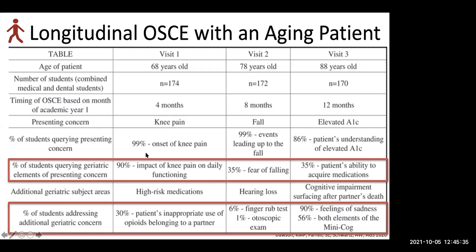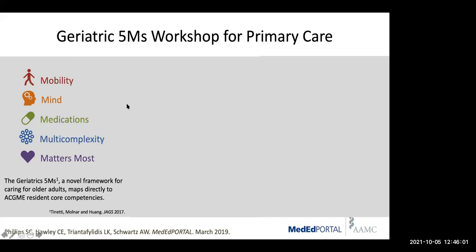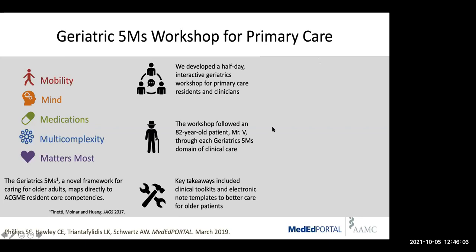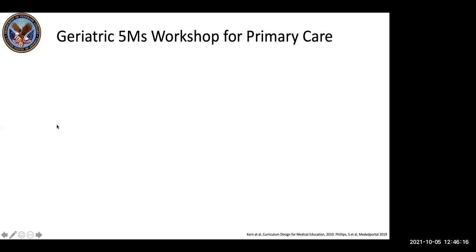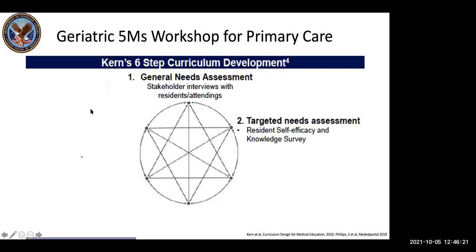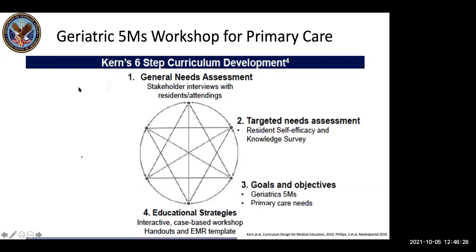Turning to resident education: the competencies for residents were published in 2010 and are about to start being updated by the American Geriatric Society. These are only for internal medicine and family residents, and there have been subsequent efforts to geriatricize other specialties. We developed a workshop integrating the geriatric 5Ms into primary care for residents, available on MedEdPortal. We followed a patient, Mr. V, through four outpatient primary care visits. We used Kern's curriculum design to ensure a thorough needs assessment, setting goals and objectives that fit learner needs and developing interactive, practical educational strategies including an EMR template.